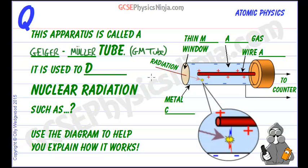Now what is it used for? It's used to detect nuclear radiation such as alpha, beta particles or gamma rays which are waves.